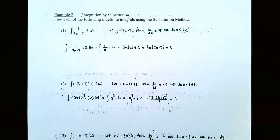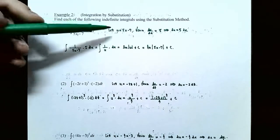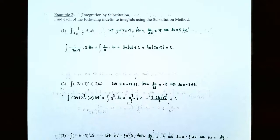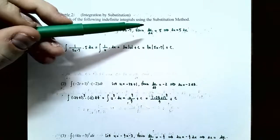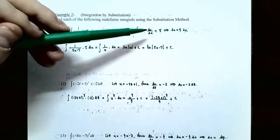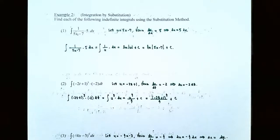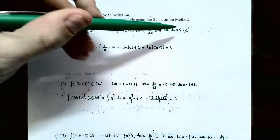Let u be the inside function, so we're making the substitution u equals 5x minus 7. We also need to take the derivative of the inside function. The derivative du dx equals the derivative of 5x minus 7, which is 5. So du dx equals 5. With the substitution method we can replace the inside function with u, but we also have to replace the dx. If du dx equals 5, multiply both sides by dx to get du equals 5 times dx. Notice in the integrand you have 5 dx, and that's going to be replaced with du.